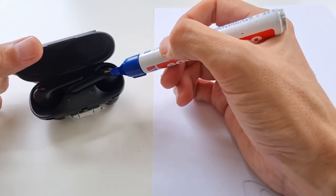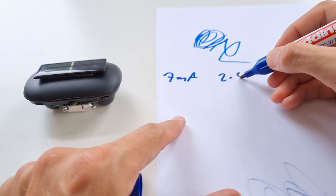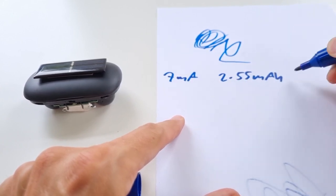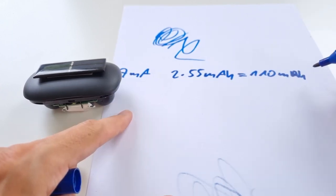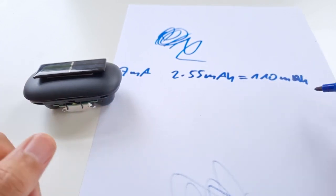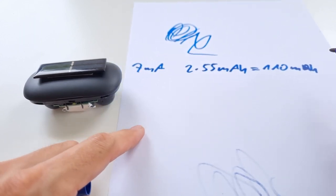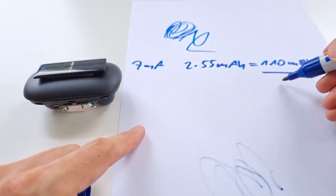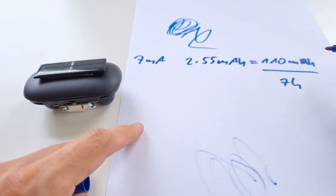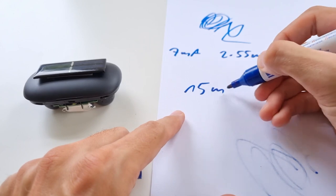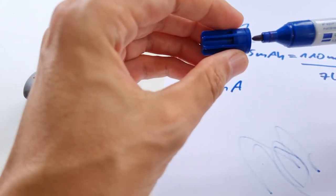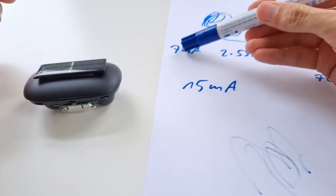Seven milliamps is what we are getting from the solar cell. Inside of these earbuds there are two 55 milliamp hour batteries, so two times 55 milliamp hours equals 110 milliamp hours. This is the charge that's inside of the headphones and according to the manual this lasts for four to seven hours.